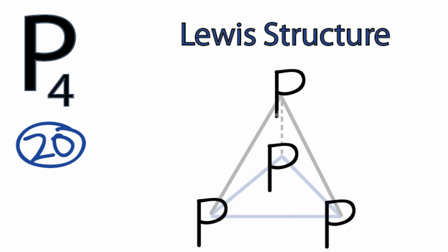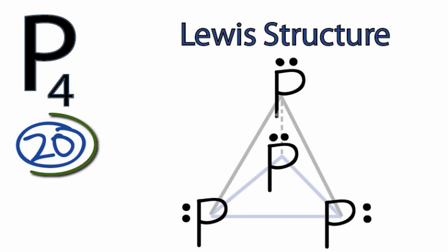Each phosphorus atom only has six valence electrons — it has three bonds going to it — so it needs eight for a full outer shell, or an octet. Let's go around and fill the octets of the phosphorus atoms until we get to the 20 valence electrons. So we have 12 used, then 14, 16, 18, and 20. We've used all 20 valence electrons, and each phosphorus atom now has eight valence electrons.